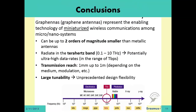Here you can see the chemical potential of a given graphene patch. To summarize, graphennas represent the enabling technology for miniaturized wireless communications among micro and nano systems. They can be up to two orders of magnitude smaller than metallic antennas. They radiate in the terahertz band, between 0.1 THz to 10 THz, and therefore offer potentially ultra-high data rates in the range of terabits per second. The transmission range is usually 1 mm, and depending on the application, medium, and modulation, it can reach up to 1 meter.